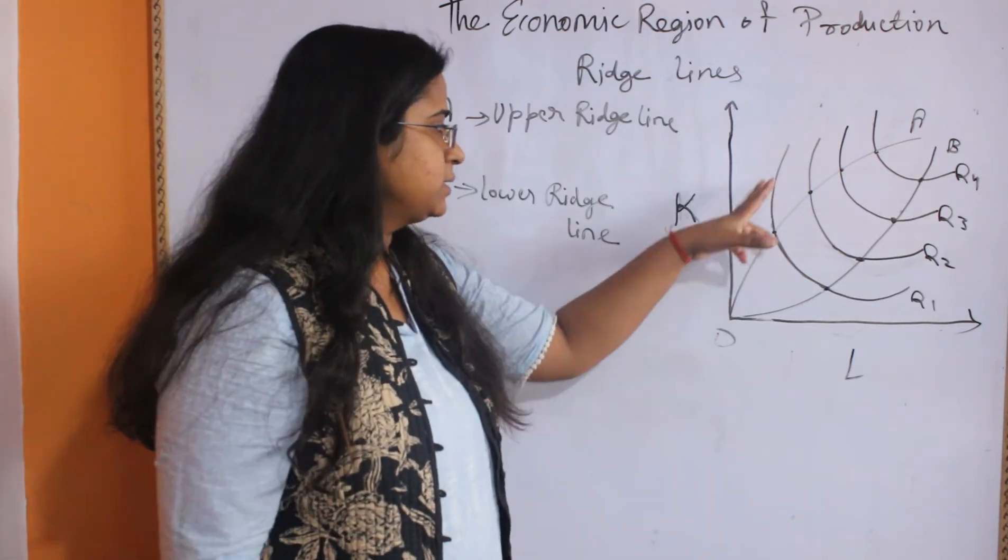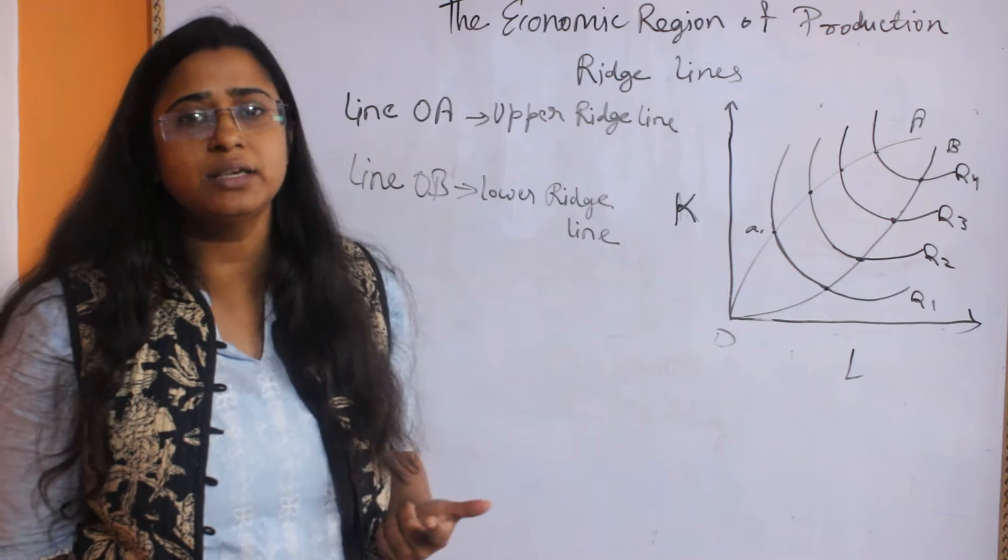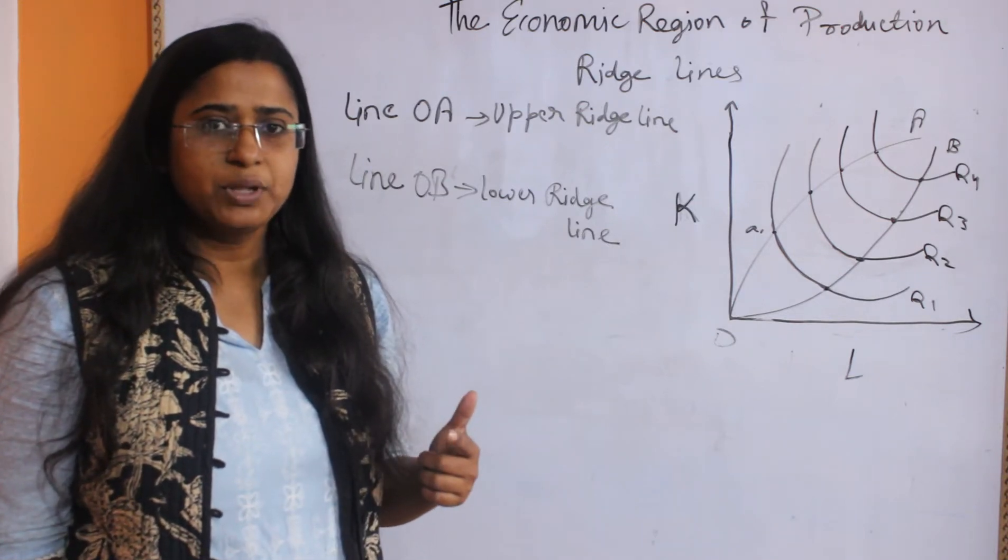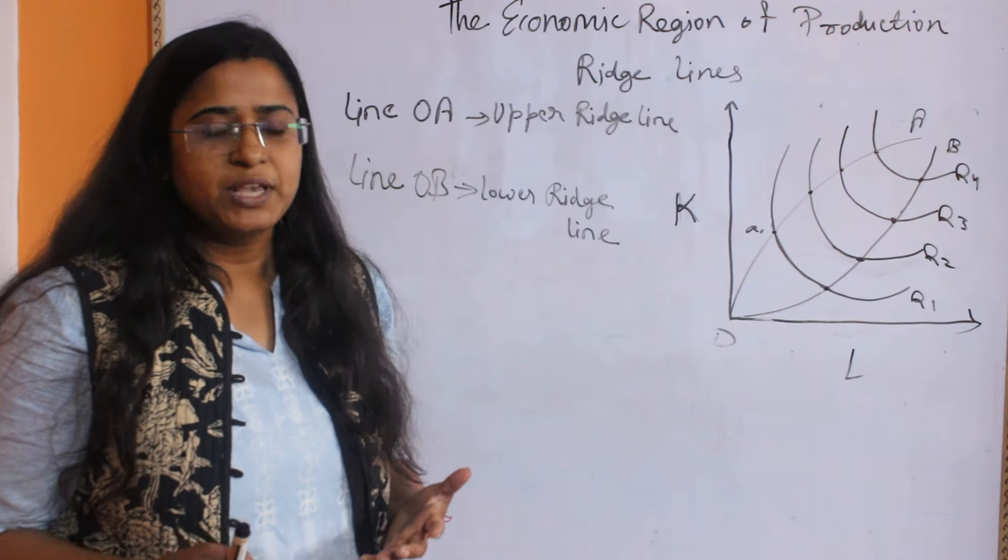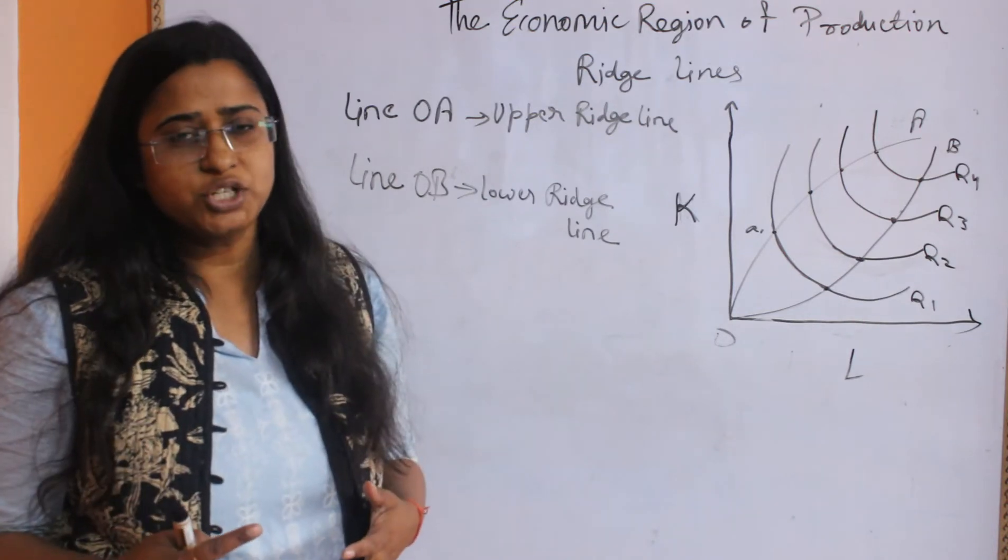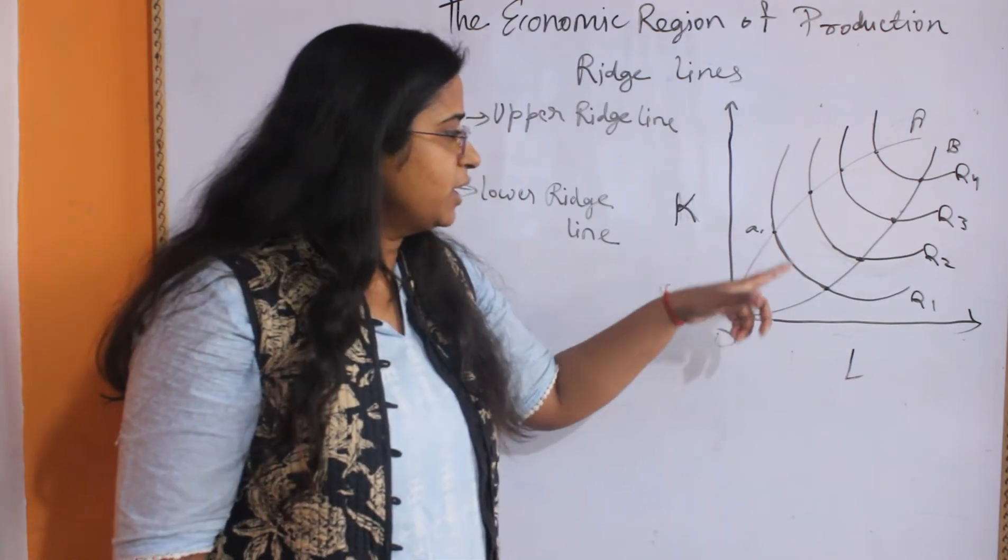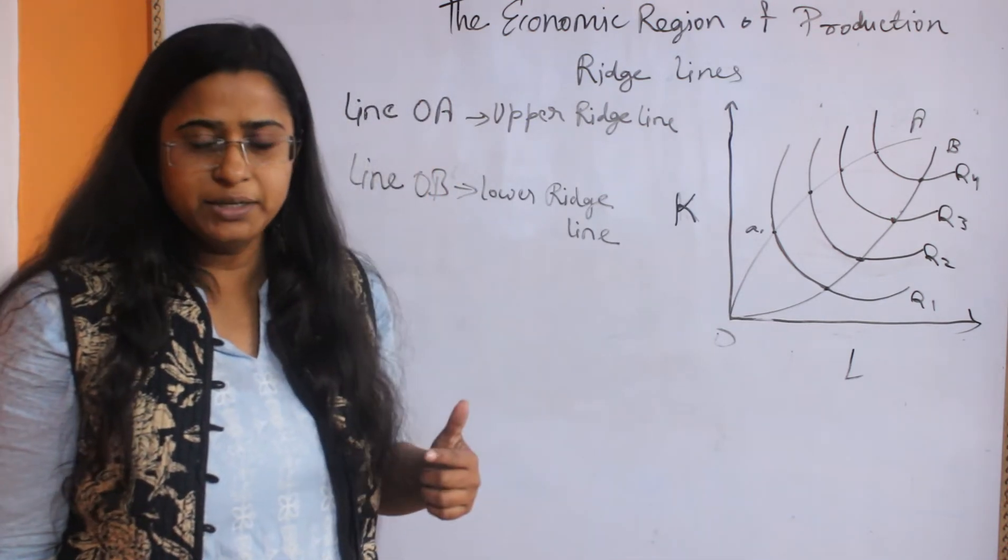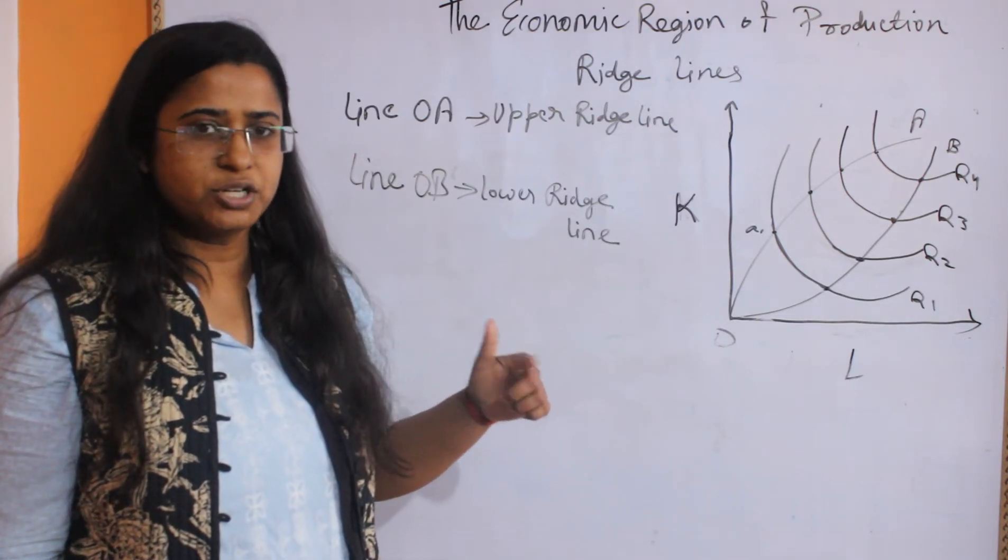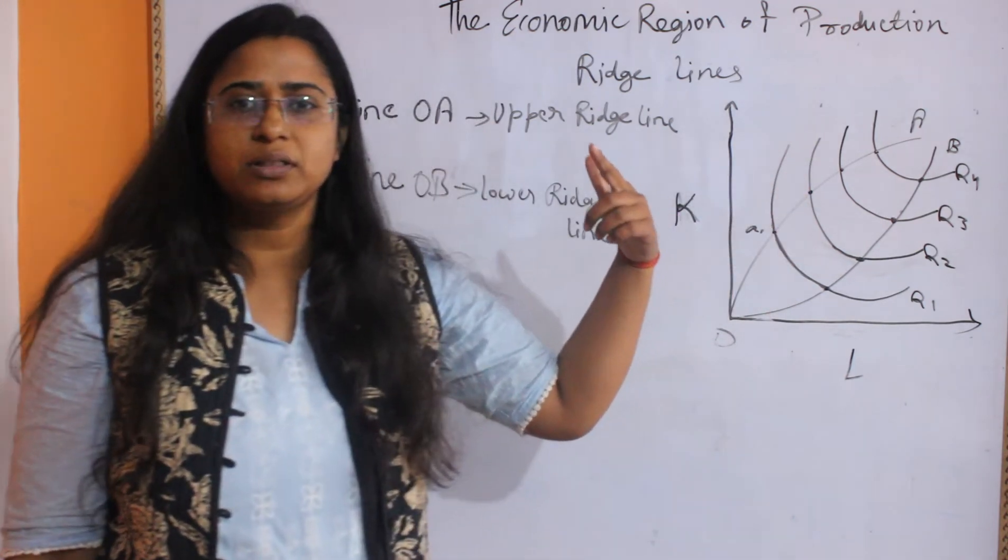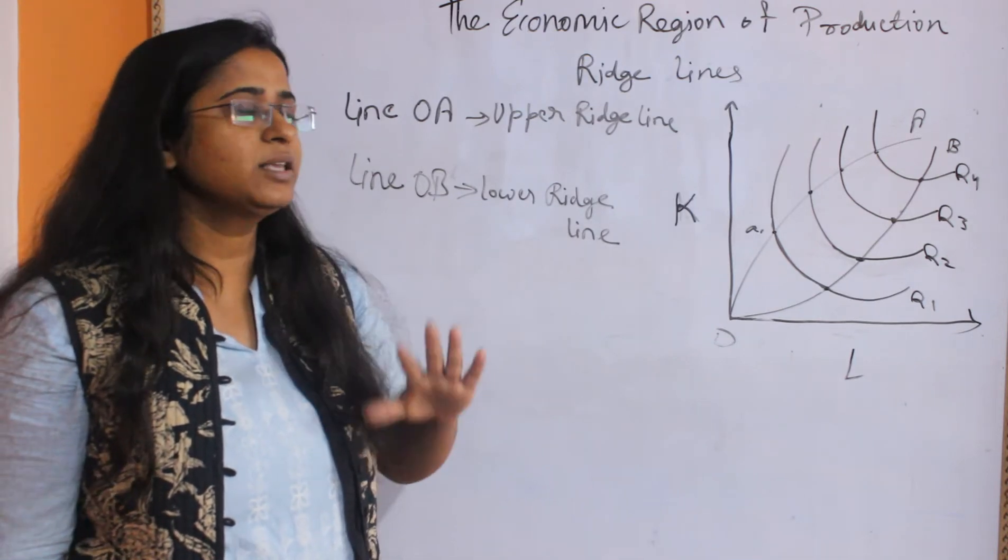When this curve, the slope of this curve gets positive, it means you are increasing the level of both factors of production, capital and labor. That means a producer is increasing both factors to get the same amount of output which he can attain at the level where he has a trade-off between factors, where he is substituting one factor for another. But above this range, the producer has to increase both of the production factors, which is inefficient for a producer.